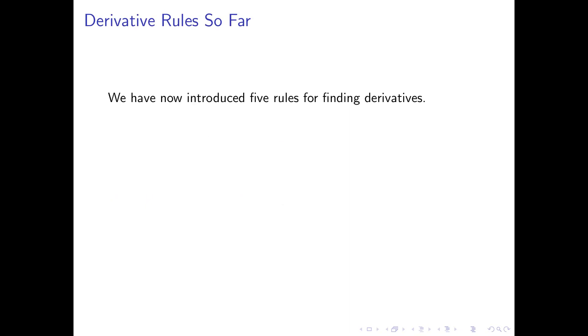To get started, let's recall what we've done so far. Up to this point, we've introduced five rules for finding derivatives without relying on the fairly complicated limit definition of a derivative. We have the constant rule, which says that the derivative of any constant, call it c, is always equal to zero. In other words, constants never change.